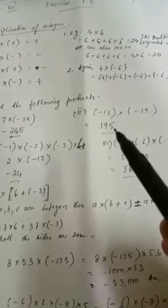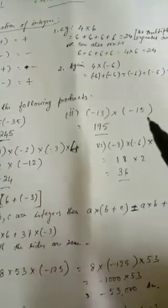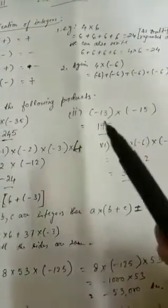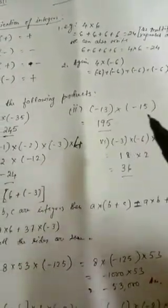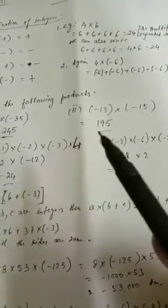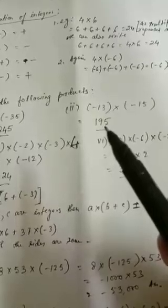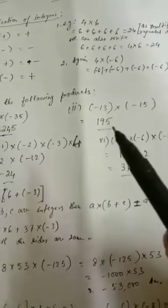Then, second sum: given minus 13 into minus 15. Both are negative, so minus into minus, you get plus. So you get plus 195.